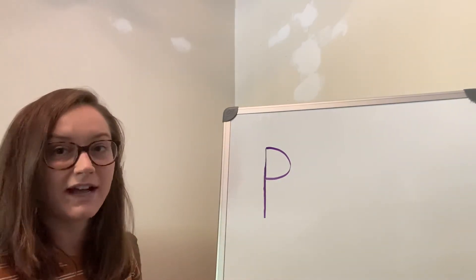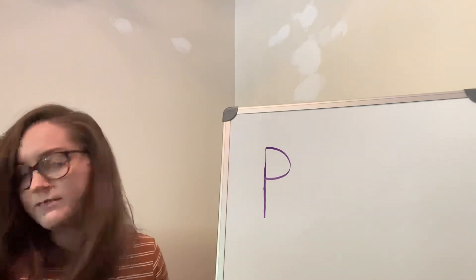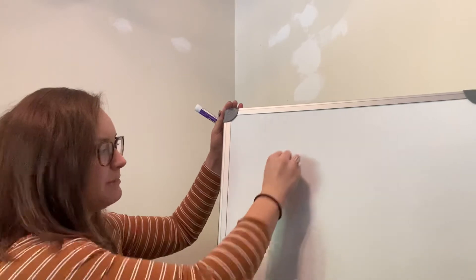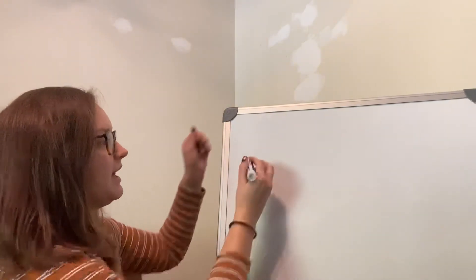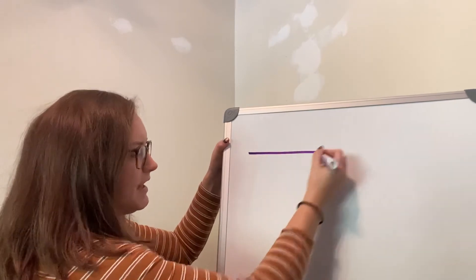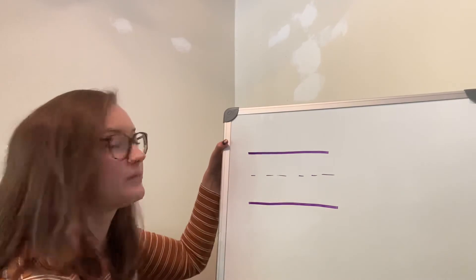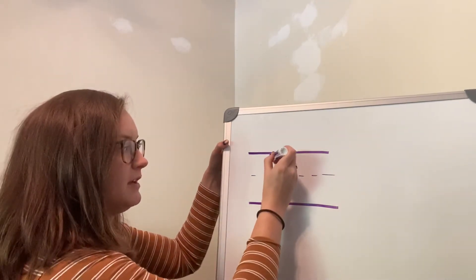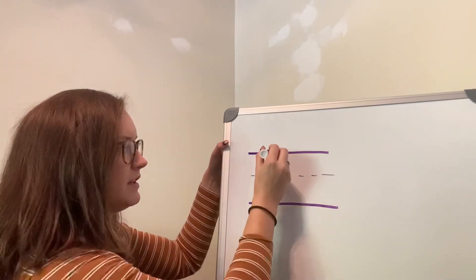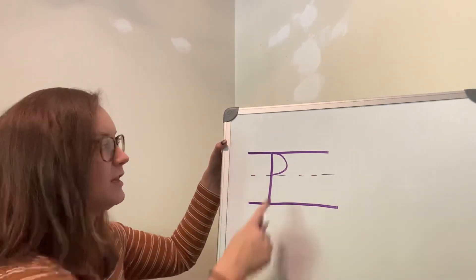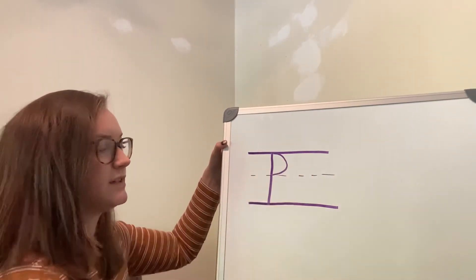Little P and big P look kind of the same but there is a difference on where they are on the paper. So if I was making my line on the top, line on the bottom, dotted line in the middle. Let's start at the top, big line down, little curve just like that. My curve goes from the top line to the middle line.